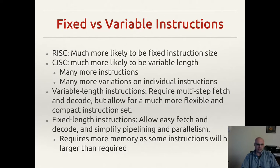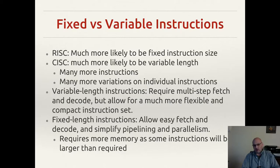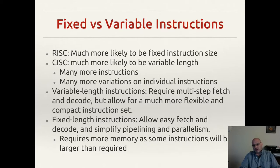With a variable length instruction, we need extra steps upfront to figure out what length the instruction actually is. Once the length is determined, more complex hardware is needed to decode it, since the decode step differs based on the instruction length. This gives a more versatile setup because we can use bits more wisely. For example, a HALT or NOOP instruction doesn't need operands — in a fixed 32-bit system those unused bits are just wasted space. In a variable length system you can make that instruction much smaller, though you're adding complexity to the system.